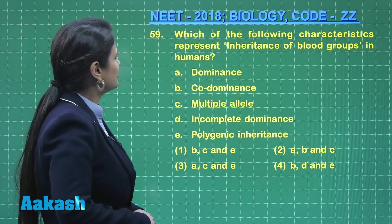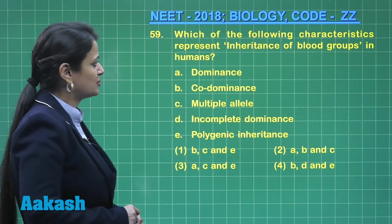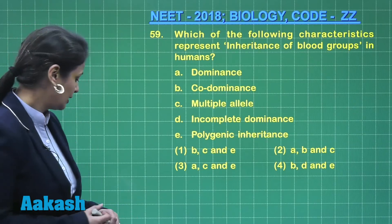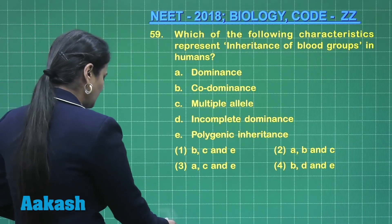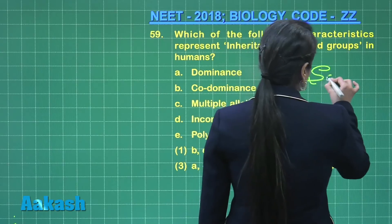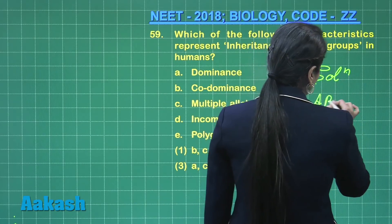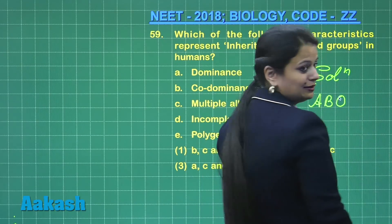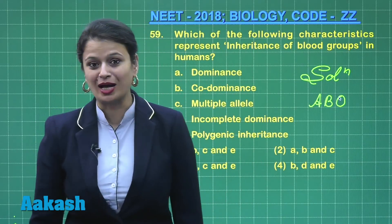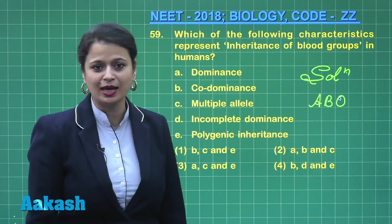Question number 59 asks which of the following characteristics represent inheritance of blood groups in humans. In the case of humans, there is the ABO blood group system, and this ABO blood group system is controlled by only one gene, and that gene is present on chromosome number 9.